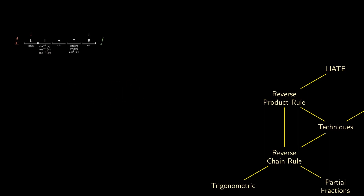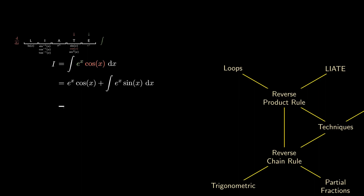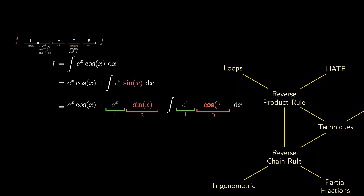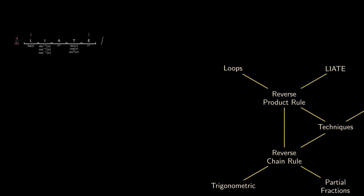Sometimes we need to do integration by parts multiple times. Consider the integral of the exponential times the cosine. Since the exponential is rightmost, we integrate that to get e to the x, keeping cosine and differentiating it to get negative of sine. Simplifying, we get the integral of the exponential times sine. So once again, we choose the exponential to be integrated. Sine remains and gets differentiated into cosine of x. Simplifying, it seems like we got the same expression as before, so we replace that with I and do a bit of algebra to obtain our final answer. We can use this idea to calculate the volume we wanted to calculate before.